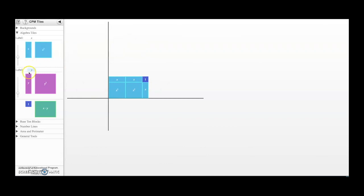When you click a tile on the screen, it will turn red for negative. If you double-click it, it'll rotate the tile. Click once for red tiles, double-click for rotation.